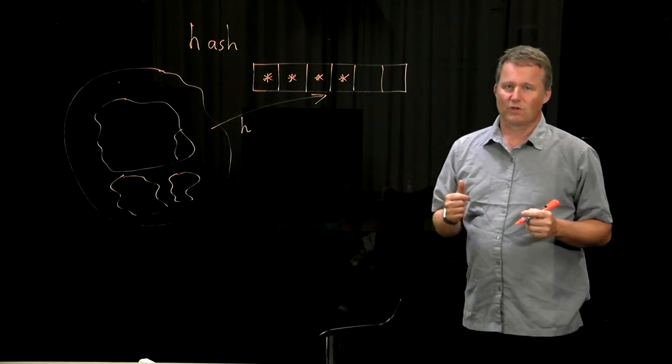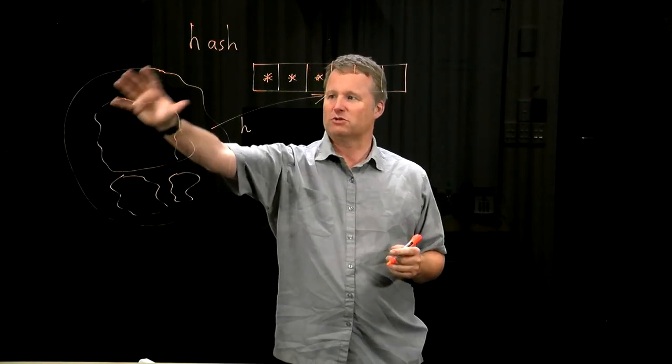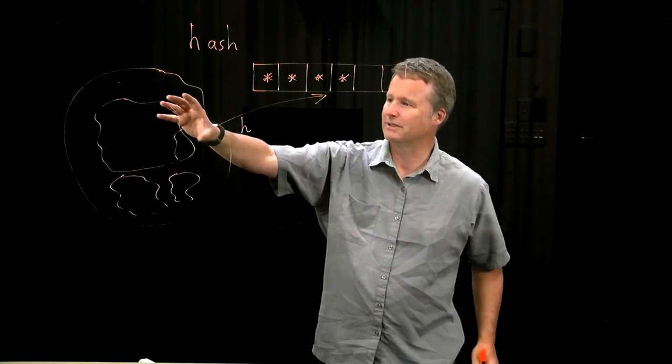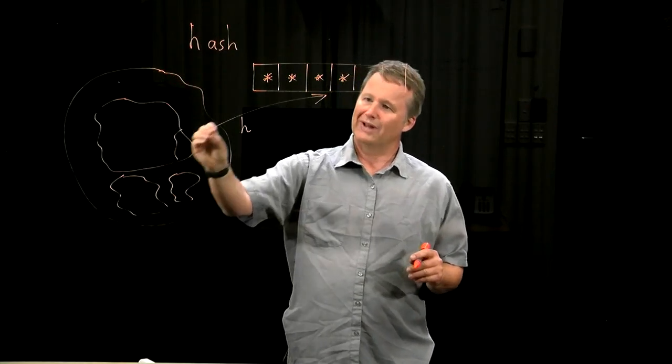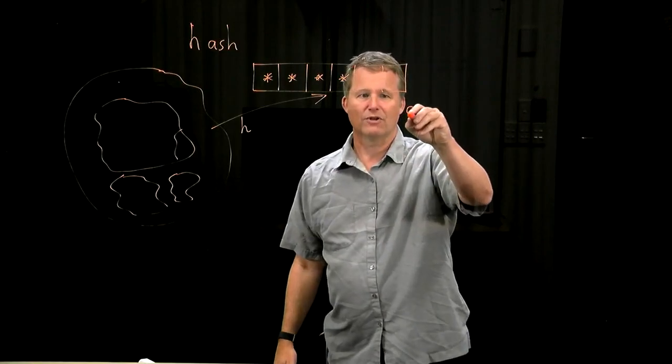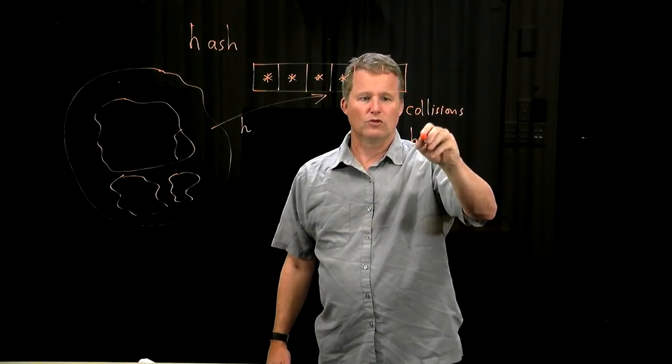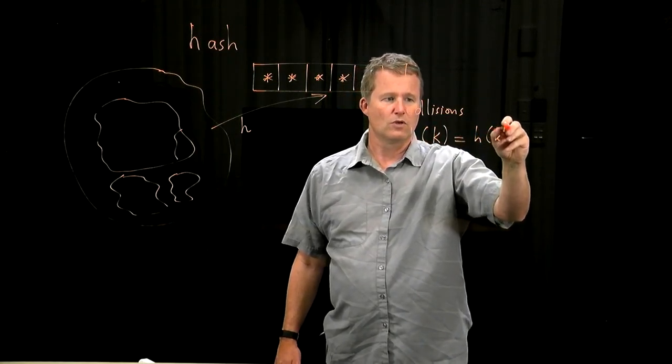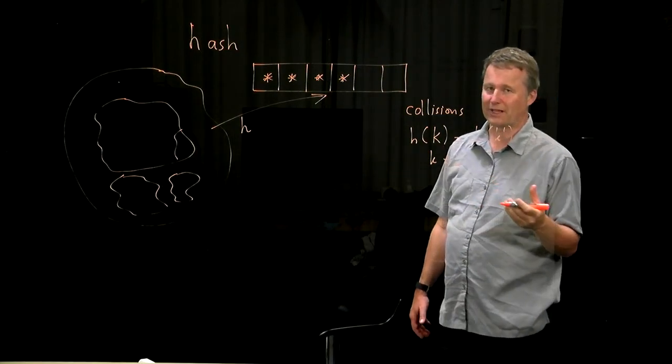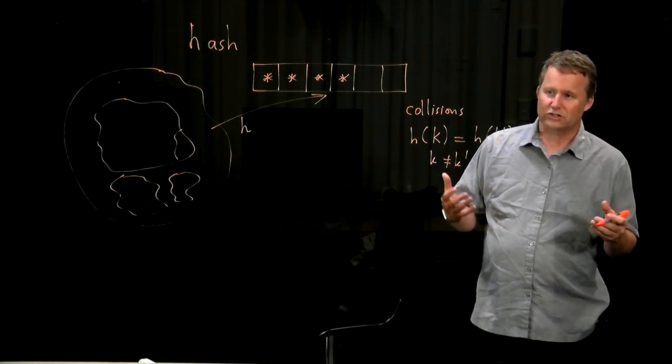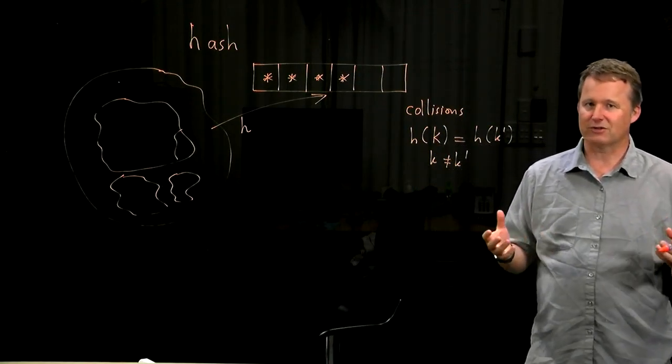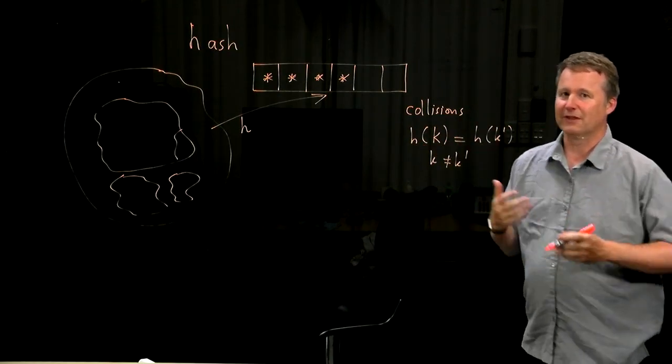So immediately we see some problems. One of them is that if this is a much bigger set here than this, it's very unlikely this function will be one-to-one. There will be possible elements of your set, possible customers who will hash to the same place. And so you are going to end up with what are called collisions. You are going to have two records, say k and k prime, which are different but their hash values are the same. That's going to be inevitable if we are going to use hashing for any reasonable application. And in some sense all the theory of hashing is to try to work out how to arrange things so that we minimize the trouble that is caused by collisions.